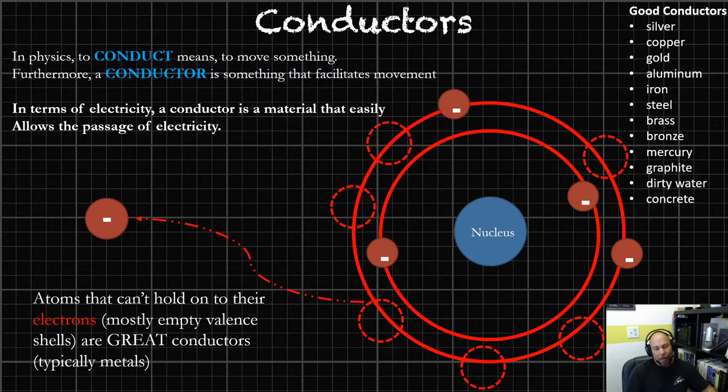So that out of the way, let's get into something that's a little less crazy. Let's talk about conductors. We're now talking about materials. In the terms of physics, to conduct means to move something. And of course, we just prefaced by talking about energy. So a conductor is something that facilitates movement. In our cases here, we're talking about energy. In terms of electricity specifically, a conductor is a material that easily allows the passage of energy or electricity. So that would be heat, light, sound, electrons, right? That kind of movement.